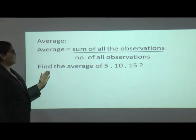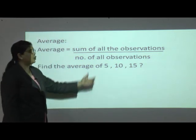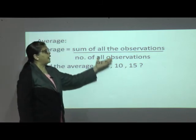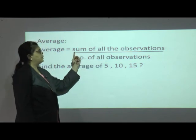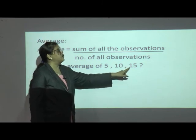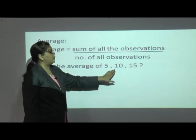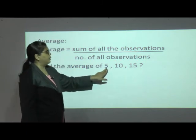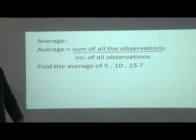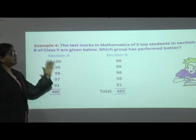In the previous class we had learned this. Find the average of 5, 10, and 15. What are your observations? They are nothing but 5, 10, and 15. Should we write them as it is? No — the word sum means we have to add: 5 plus 10 plus 15. That should be written in the numerator, and the number of observations — how many observations are you having? 3. So it is divided by 3. This formula everyone should know — what is an average.